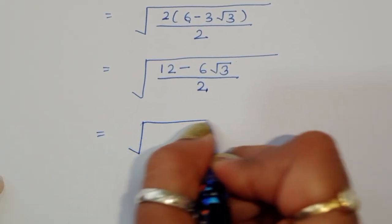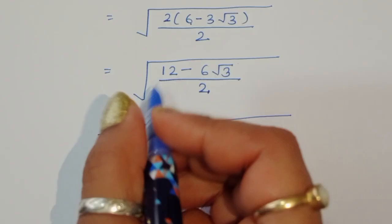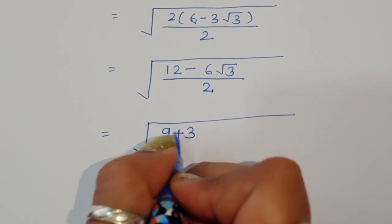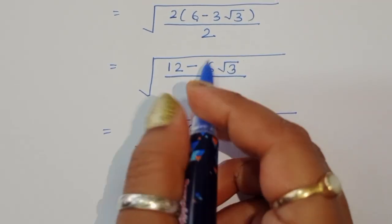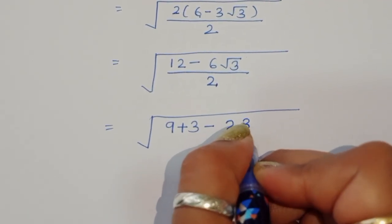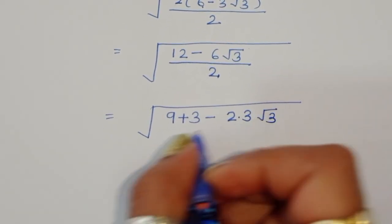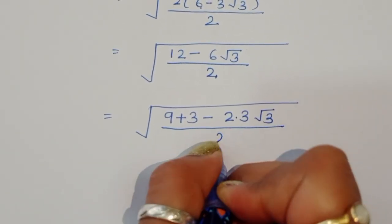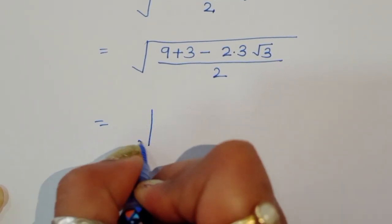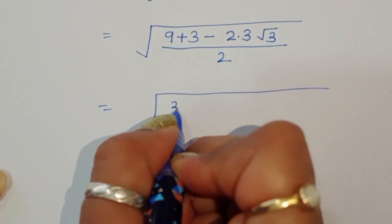Now we can write 12 as 9 plus 3, since 9 plus 3 equals 12. And we can write 6 as 2 times 3. So the numerator becomes 9 plus 3 minus 2 times 3 times square root of 3, all divided by 2.